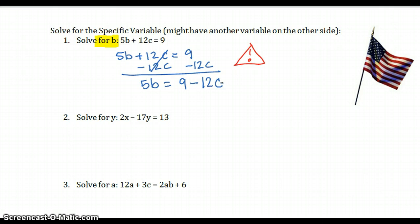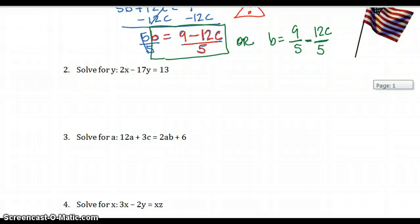So we're left here with 5B and 9 minus 12C. That's the best I can do on the right side of that equation. To undo what's happening to B, we need to divide both sides by 5. Now B equals 9 minus 12C over 5. Or, if you prefer, you can say B equals 9 over 5 minus 12C over 5. Personally, I prefer this answer, but if 5 was divisible into 9, then you need to realize you should simplify.